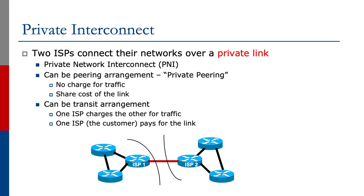A private interconnect is where two network operators connect their networks over a private link. Today this is called private network interconnect or PNI. It can be a peering arrangement — for example, private peering — where there's no charge for traffic and the operators share the cost of the link between each other's networks. It can also be a transit arrangement where one ISP will charge the other for traffic, and the customer ISP will pay for the physical link between the two networks. The diagram shows a private interconnect.